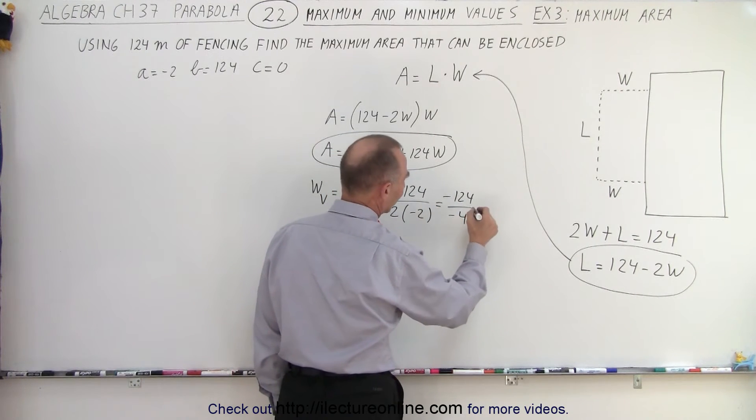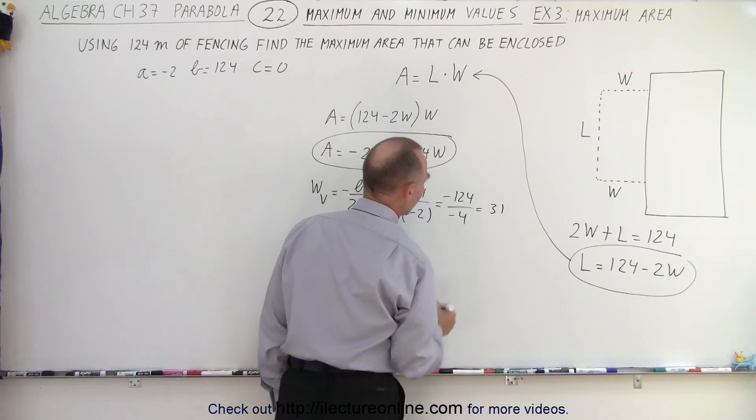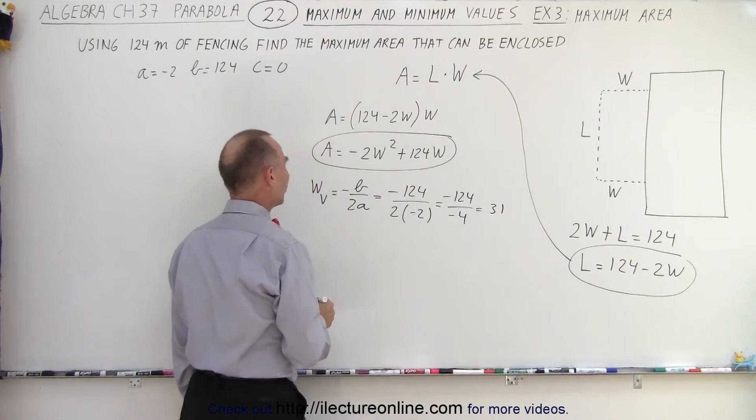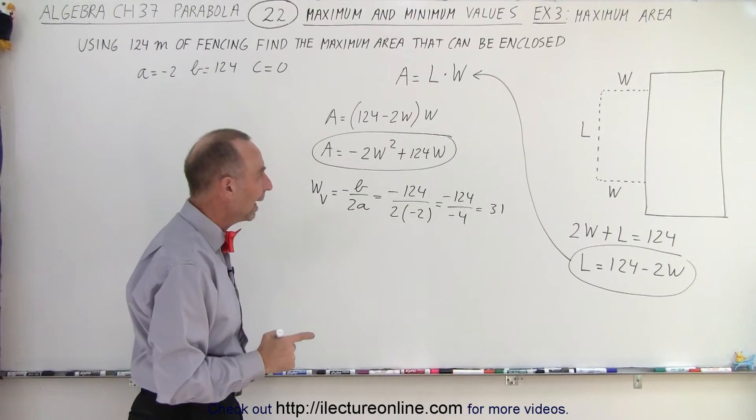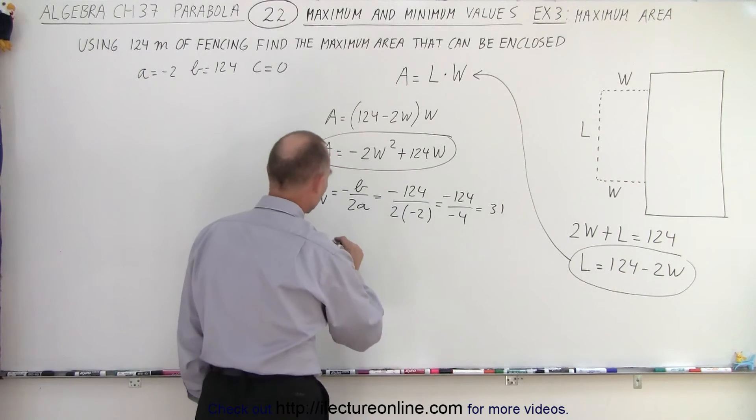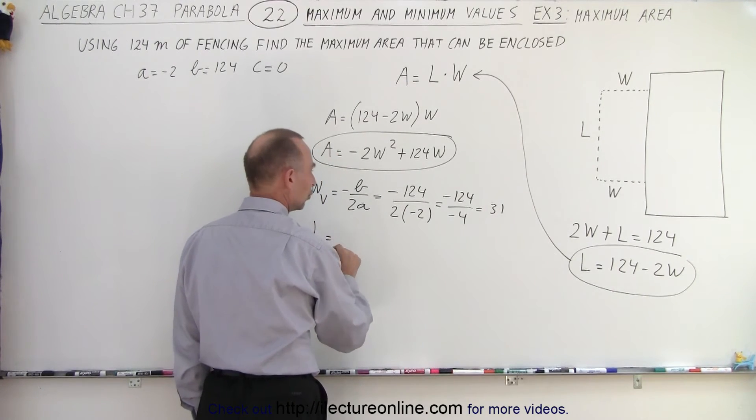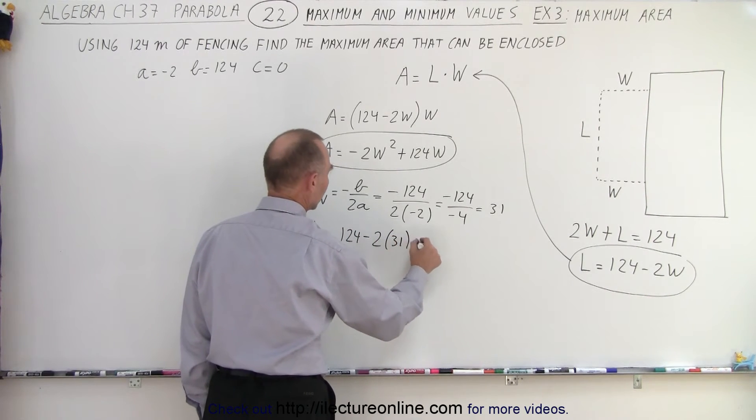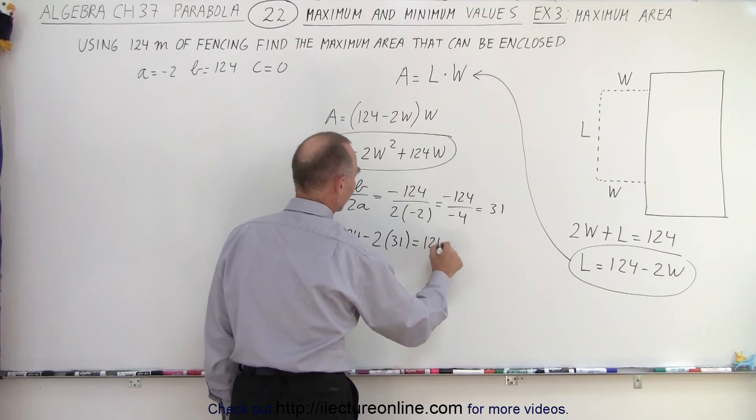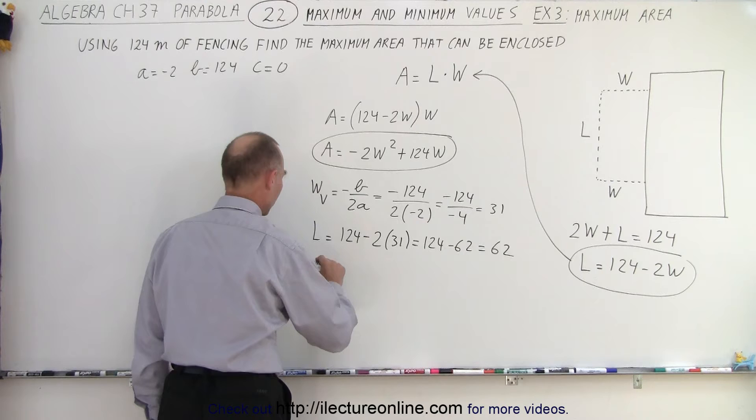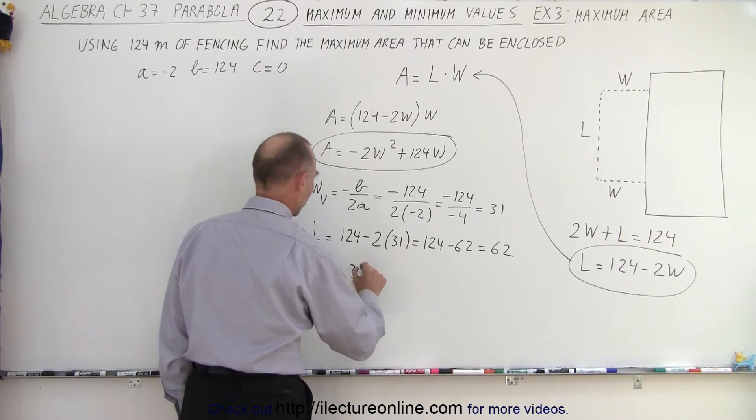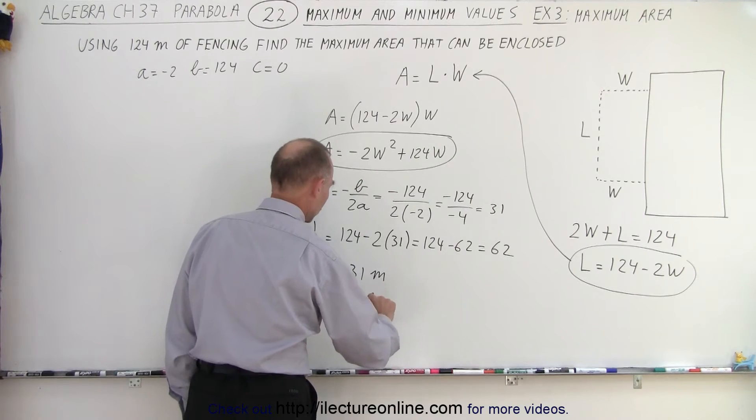Half of that is 62, half of that would be 31. So 31 times 4 is 124. So they want the width to be 31, and they want the length to be, the length is equal to 124 minus 2 times the width, which is 31. That would be 124 minus 62, which is equal to 62. So they want the width to be equal to 31 meters, and they want the length to be equal to 62 meters.